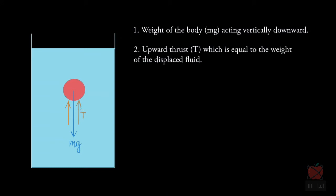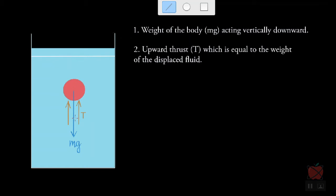The upward thrust is equal to the weight of the displaced fluid. Initially, when the body was not dipped in the liquid, the water level was at a certain height. Since the body is dipped inside the liquid, the level of water rises. The amount by which it rises is the displaced fluid, and its weight equals the upward thrust — that is Archimedes' principle.